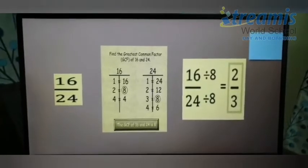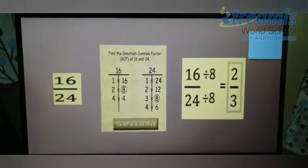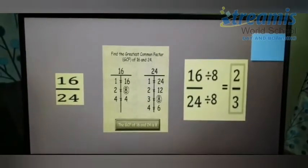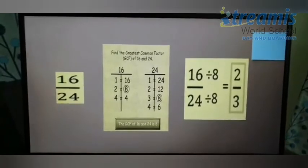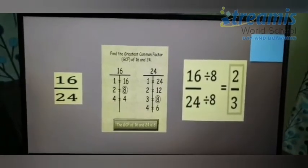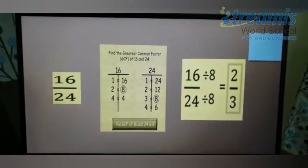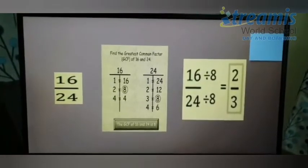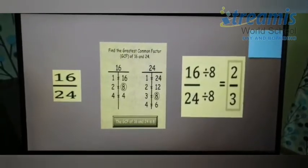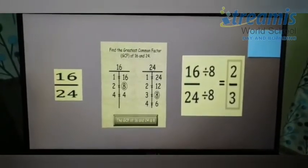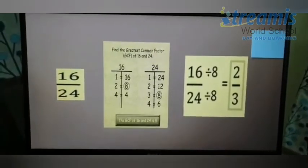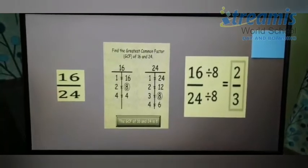I repeat, it's 1, 2, 4 and 8. Since 8 is the GCF, greatest common factor of 16 and 24. My last step is to divide both the numerator and the denominator by 8. Yes, I got my answer and it's 2/3. Yes, 2/3 is the simplified fraction for 16/24.